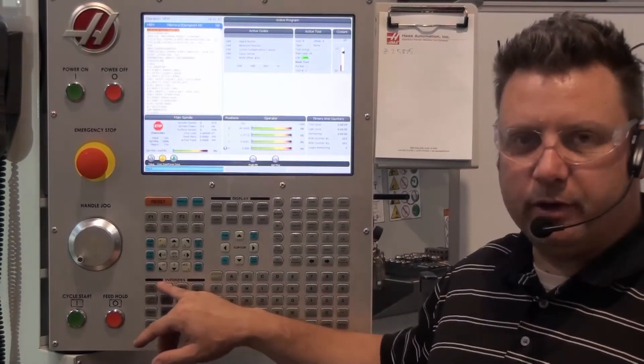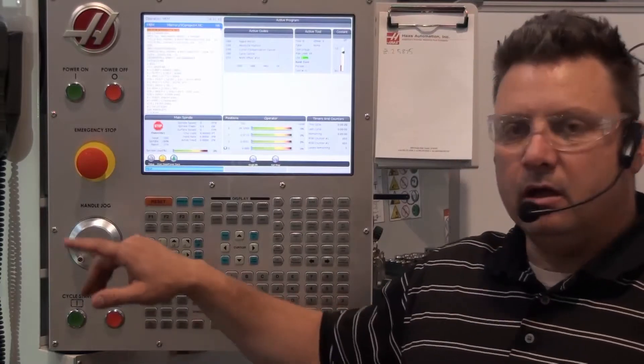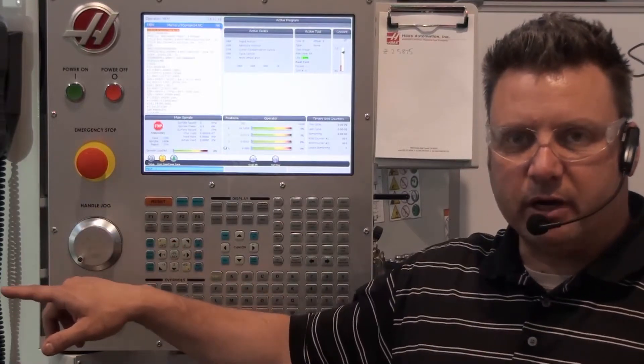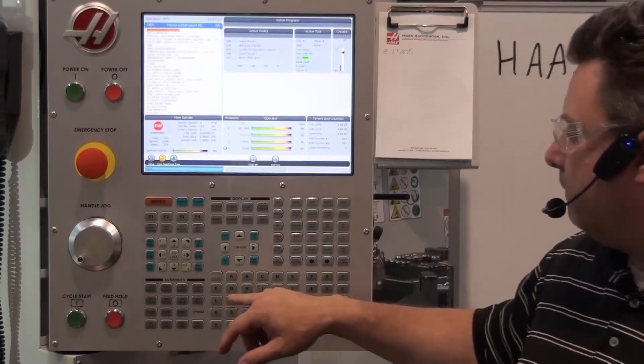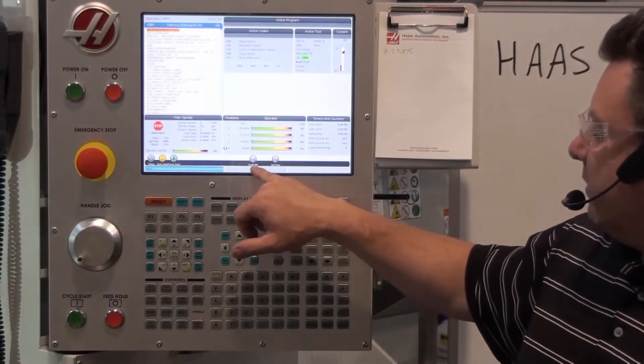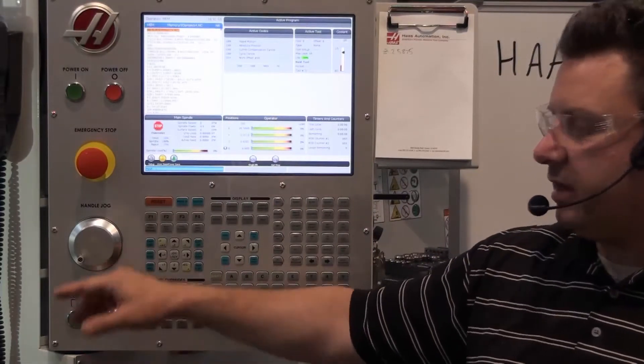The reason I bring my feed rate down is if my feed rates are incorrect or my tool is dull, I'll have less of a chance of breaking my tool while I run my first part. The reason I hit single block is so that I can cycle start through the beginning of the entire program to make sure everything's working correctly.